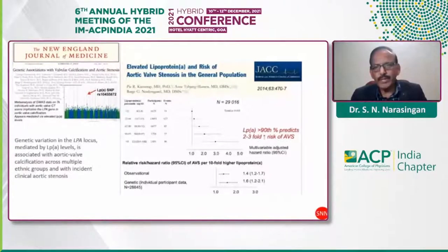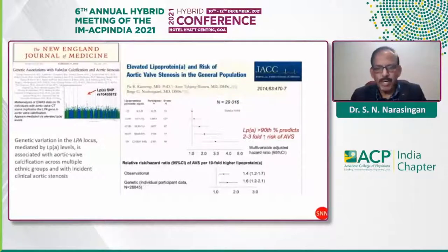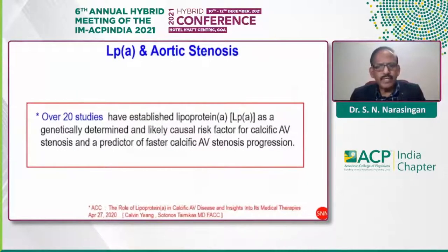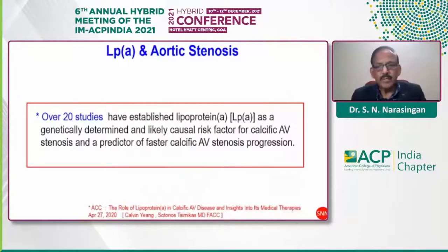In 2014, the DANCE study published important data on elevated lipoprotein(a) levels and risk of aortic stenosis. People with lipoprotein(a) over the 90th percentile had a two-fold increase in atherosclerotic aortic stenosis; at the 95th percentile it was about a three-fold increase. A 2020 ACC publication confirmed that over 20 studies have established lipoprotein(a) as a genetically determined and likely causal risk factor for calcific aortic stenosis, and a predictor of faster calcific aortic stenosis progression.